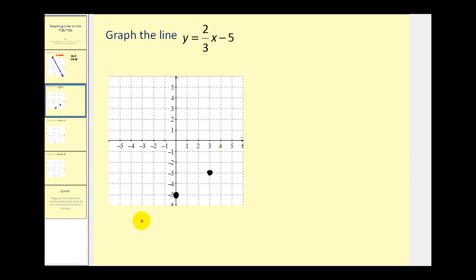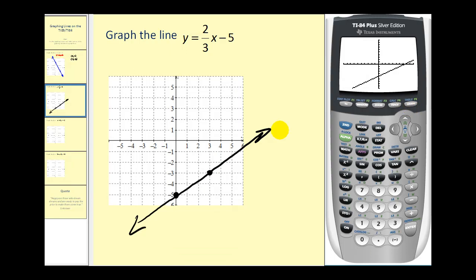And again, just to verify, we have a y-intercept of negative five. Our slope is two-thirds, so if we go up two, right three, there's our second point. And then just to verify, if we press graph again, our line matches a line on the screen.